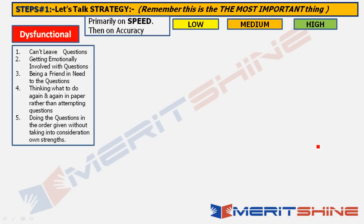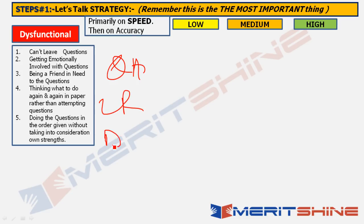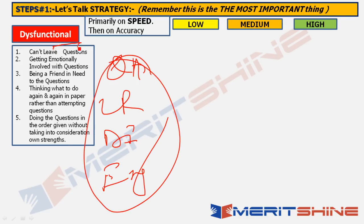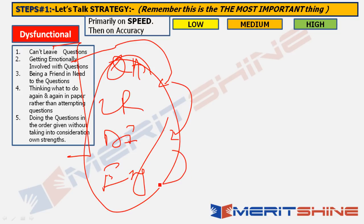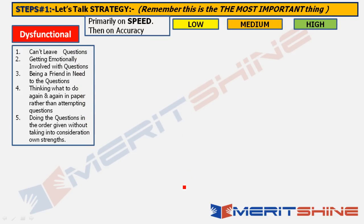These dysfunctional characteristics don't only make you lose marks in English — they make you lose marks everywhere: in Quantitative Aptitude, in LR-DI, everywhere. If you work on these characteristics and stop doing them, you will gain an advantage from all sides.